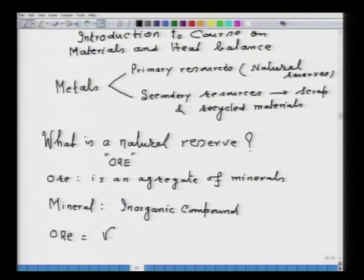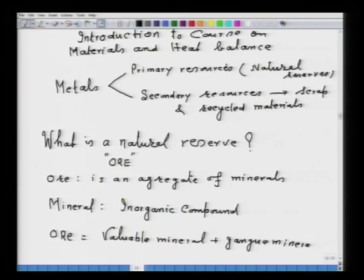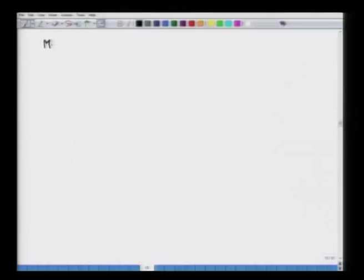We can say that ore consists of a valuable mineral plus gangue mineral. The valuable mineral is the one from which we want to extract the metal. Let us see the ore, valuable mineral, gangue mineral, and so on. If I put here: metal, ore name, valuable mineral, then metal grade.